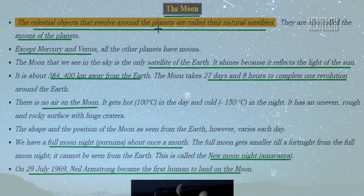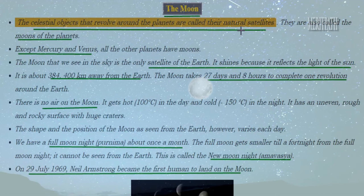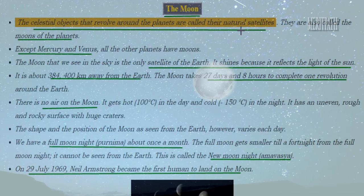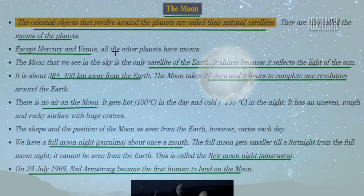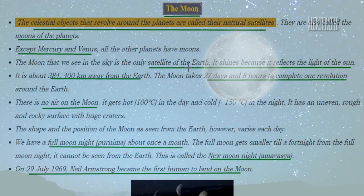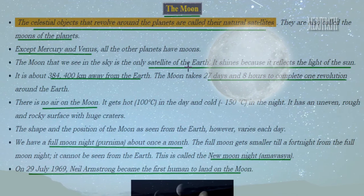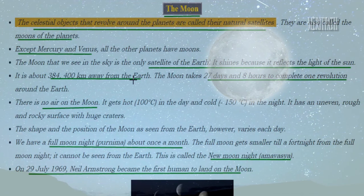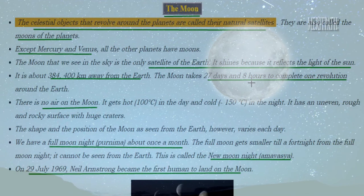The celestial objects which revolve around planets are natural satellites. Every planet has some objects revolving around it, known as natural satellites or moons of the planets. Except Mercury and Venus, all the planets have moons. The moon we see in the sky is the satellite of the Earth. Moon is a non-luminous object — it only reflects the light of the sun. The moon is at a distance of 384,400 kilometers from the surface of the Earth, and to complete one revolution around the Earth, the moon takes 27 days and 8 hours.